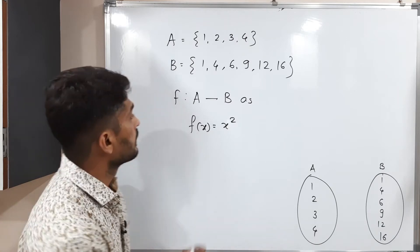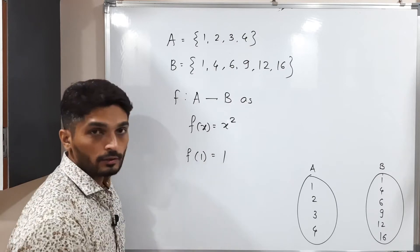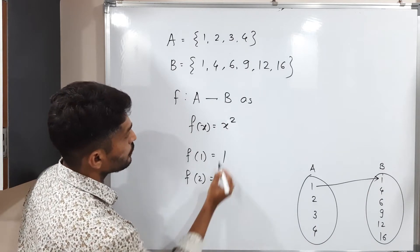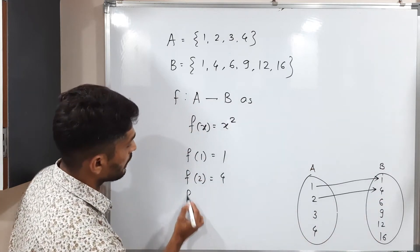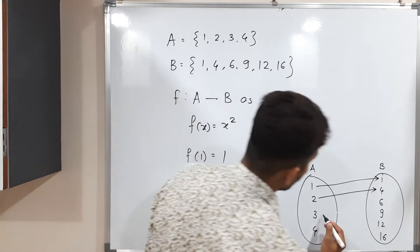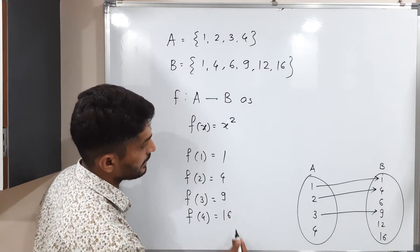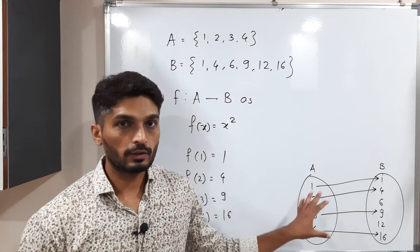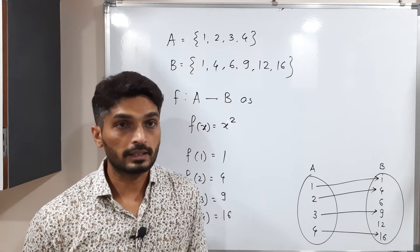Let us apply this function on our domain elements. f(1) = 1² = 1, so 1 maps to 1. f(2) = 2² = 4, so 2 maps to 4. f(3) = 3² = 9, so 3 maps to 9. f(4) = 4² = 16, so 4 maps to 16. Set A is the domain and set B is the co-domain.